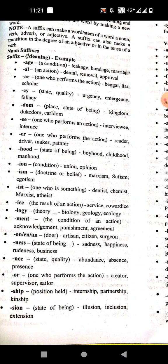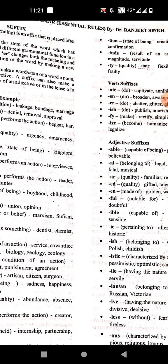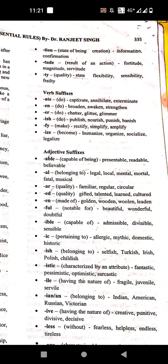'-sion' means state of being. Examples: inclusion, extension, illusion, explosion.